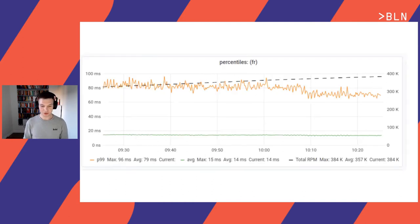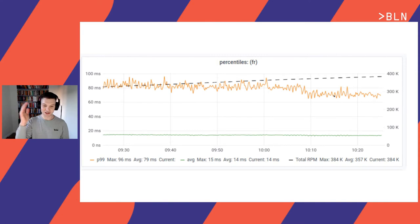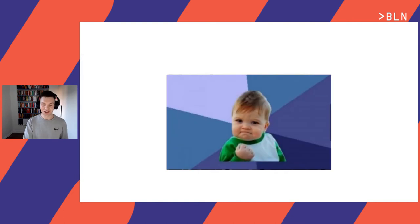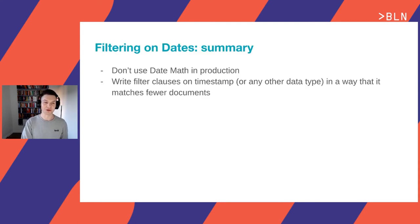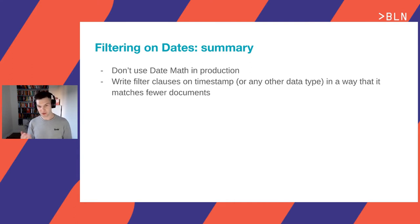When we deployed this change to production, we saw a latency chart where latency goes on and on, then after the deployment — bam — a clear decrease in latency. When you see a chart like that, you immediately think: yes, we achieved something nice today. To summarize the date filtering lesson: don't use date math in production because it invalidates caches; write your filter clauses on timestamps in a way that matches fewer documents.